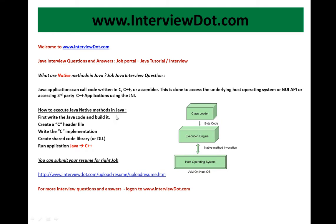How to execute Java native methods: First, write the Java code and build it. Create a C header file. Write the C implementation. Then create the shared code library — that means a DLL. You can create the DLL, place it properly, and run the application from Java to C++.